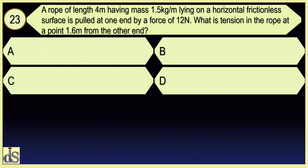A rope of length 4 meters having mass 1.5 kg per meter lying on a horizontal frictionless surface is pulled at one end by a force of 12 newtons. What is the tension in the rope at a point 1.6 meters from the end? 4.8 newtons.